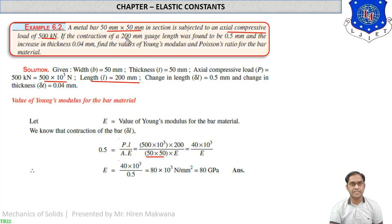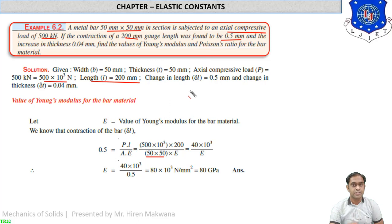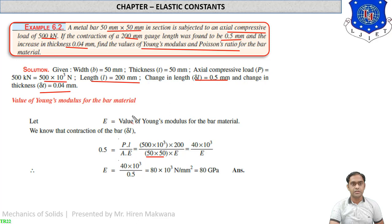Contraction of the gauge length is 0.5 mm, so delta-l equals 0.5 mm (contraction means decrement). Increase in thickness is delta-t equals 0.04 mm. We need to find Young's modulus E and Poisson's ratio 1/m (or mu). Using delta-l equals PL by A, with delta-l, P, L, and A all known, we solve for E.